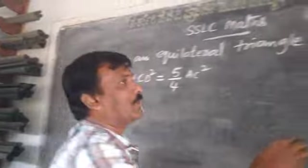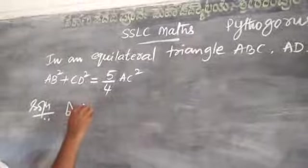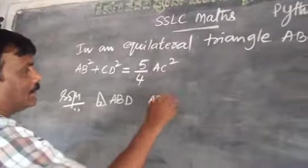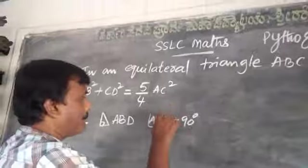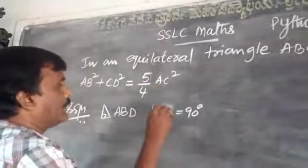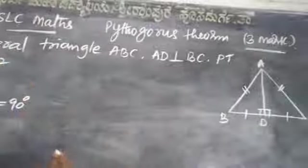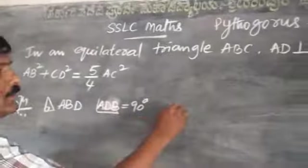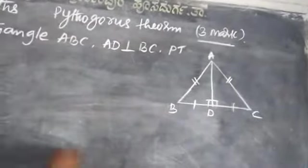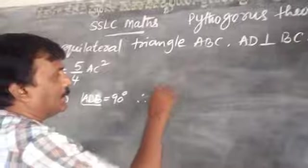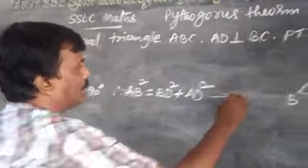In right angle triangle ABD, by the Pythagorean theorem, the hypotenuse square is equal to the sum of the squares on the other two sides. Therefore AB square is equal to BD square plus AD square. This is equation number 1.